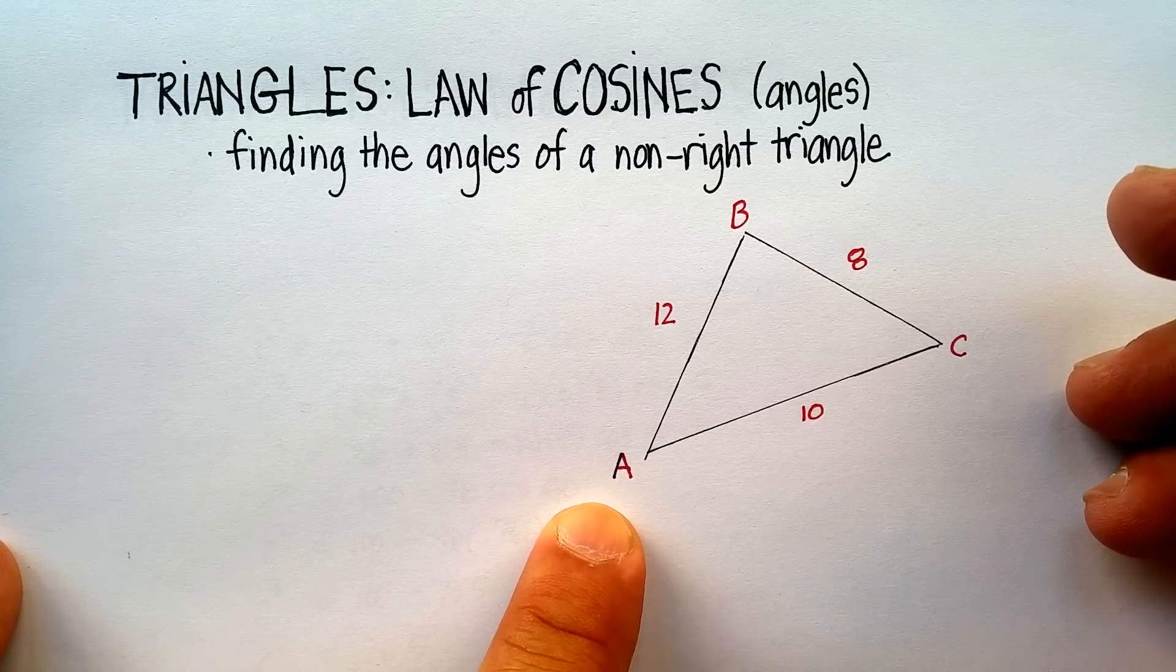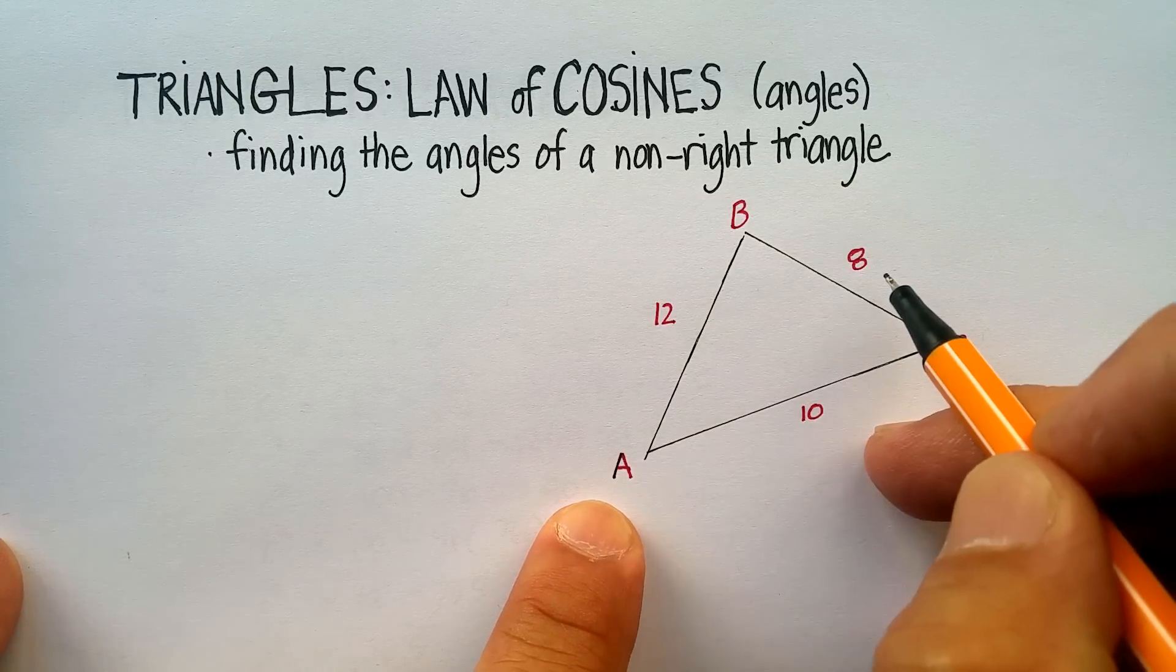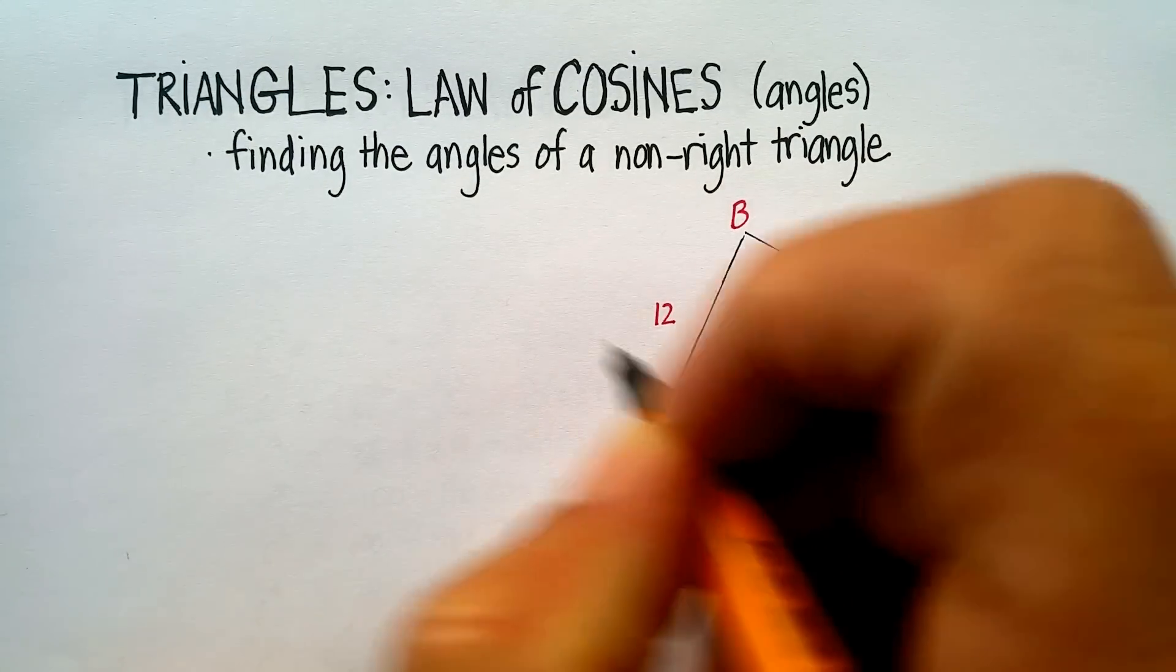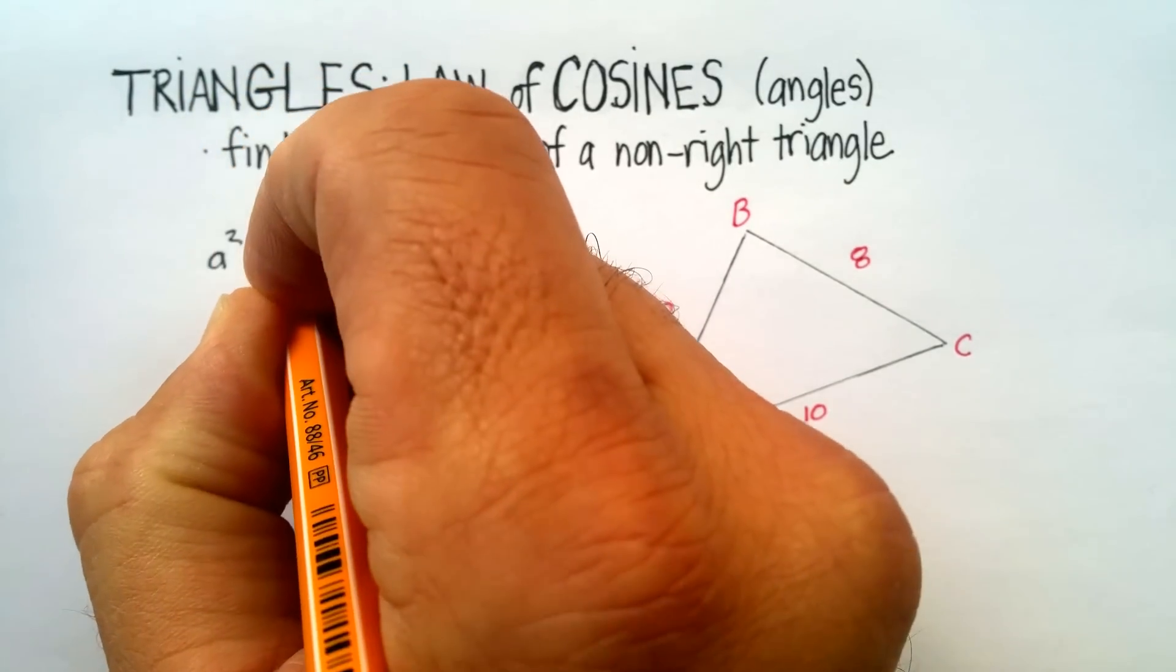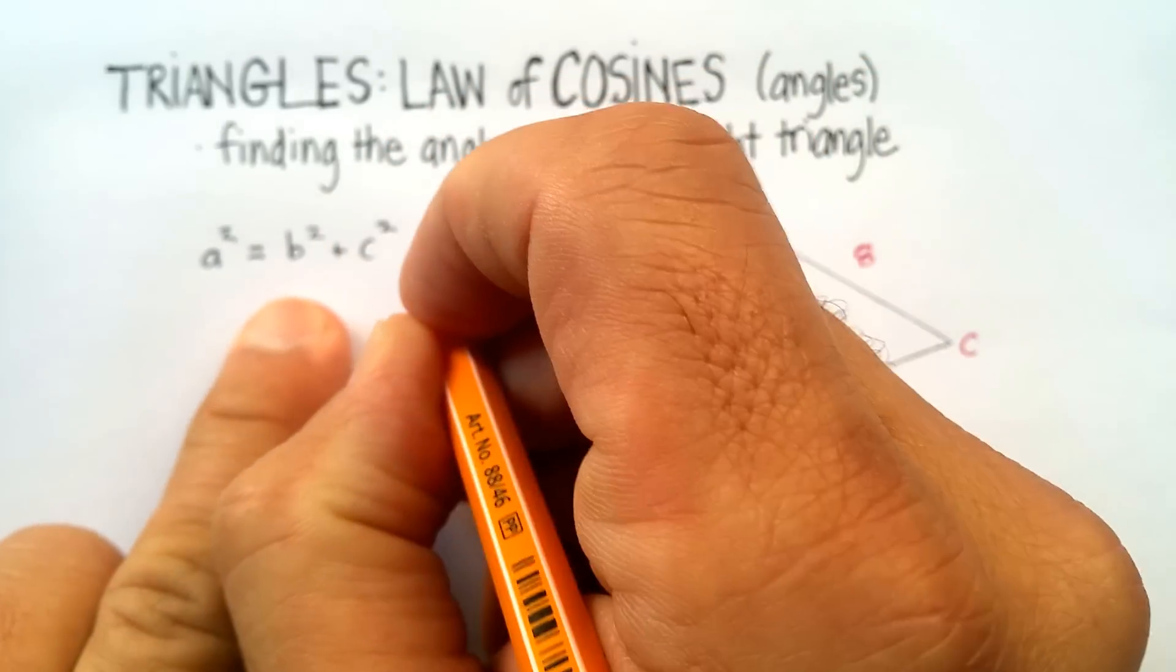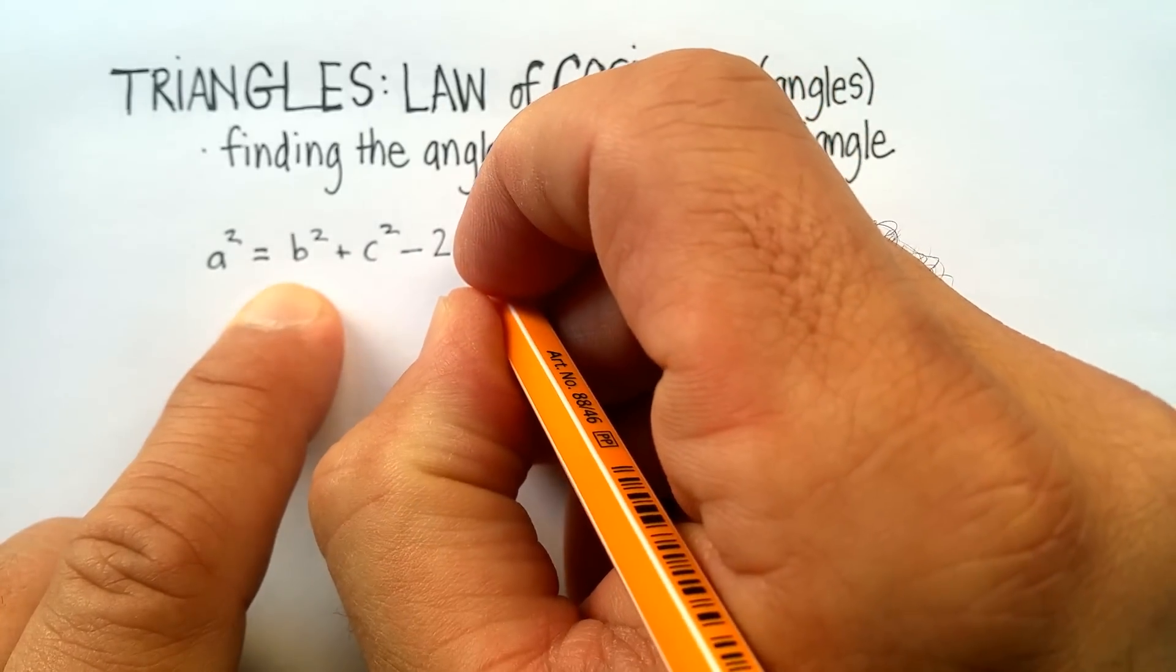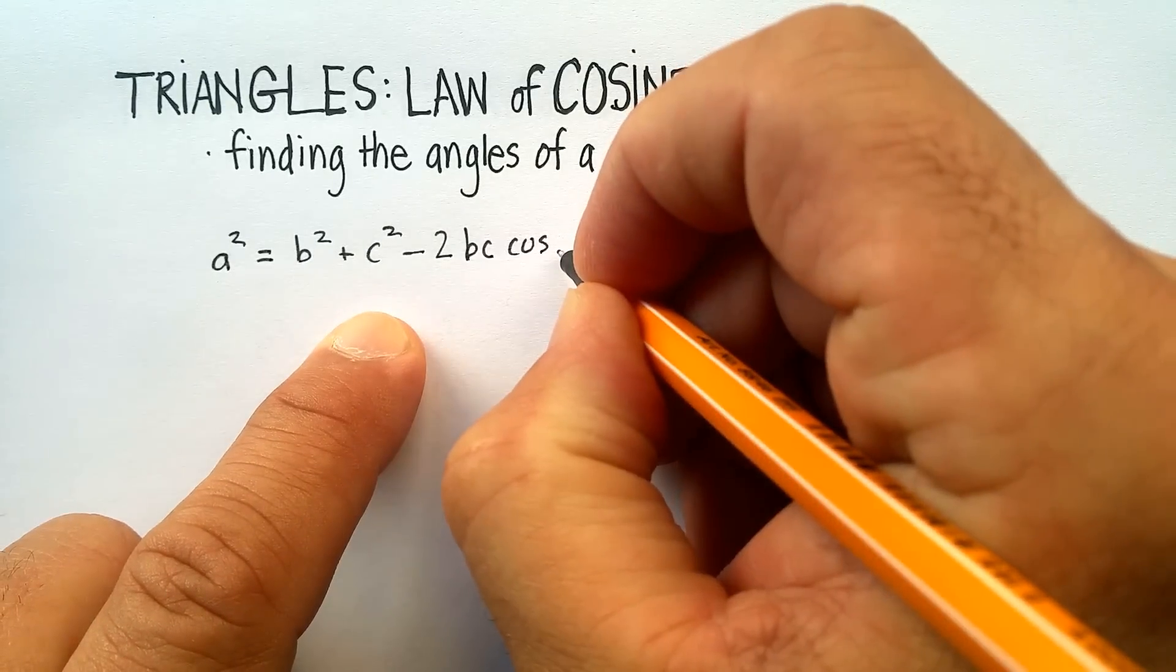Now let's look for angle A here. Using the law of cosines, a² is equal to b² plus c², the other two sides, minus 2bc cosine of angle A. You have to use these sides because that's how the law works.